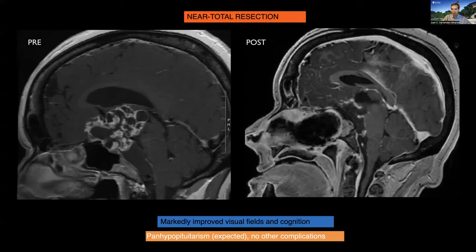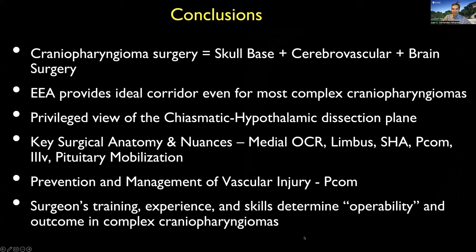In conclusion, craniopharyngioma surgery requires the combination of skull-base neurovascular and brain surgery expertise. The endonasal approach provides an ideal corridor even for the most complex craniopharyngiomas. It offers a unique view of the dissection plane of the chiasm and hypothalamus, and we have reviewed here key surgical nuances of the different stages of the approach. Understanding the hypothalamic plane of dissection remains a very important aspect of this operation. Thank you very much.